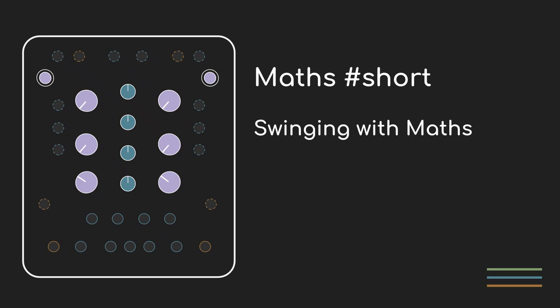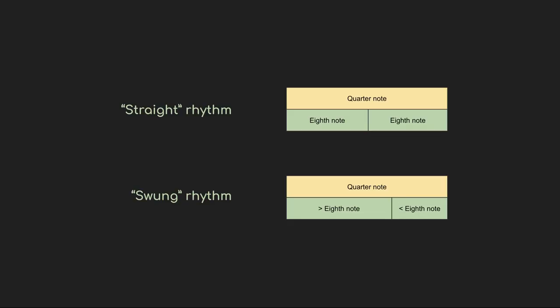Just a quick one today. Someone asked how to achieve swing with Maths. A swung rhythm is one where the pulses don't fall on a perfect clock, but instead every second one is pushed out in time, lengthening one note, shortening the next.